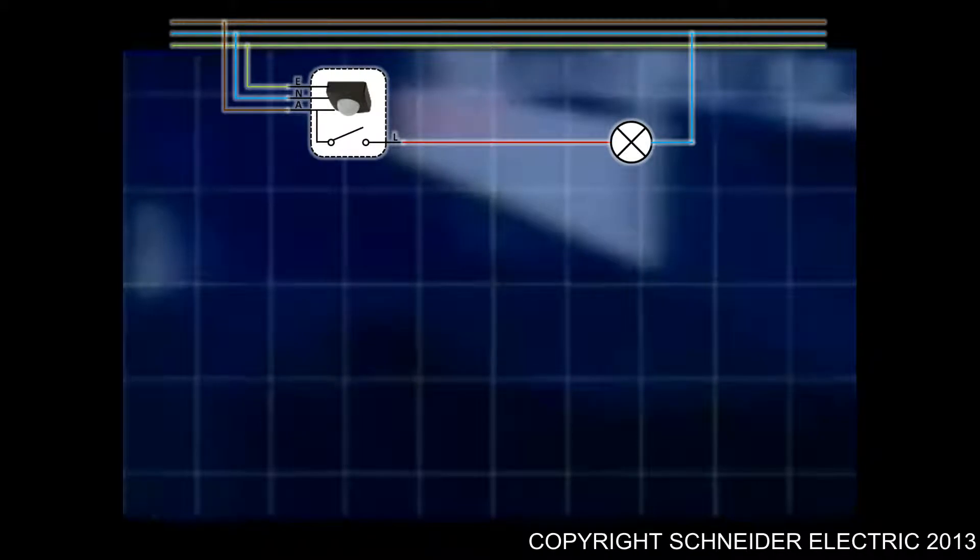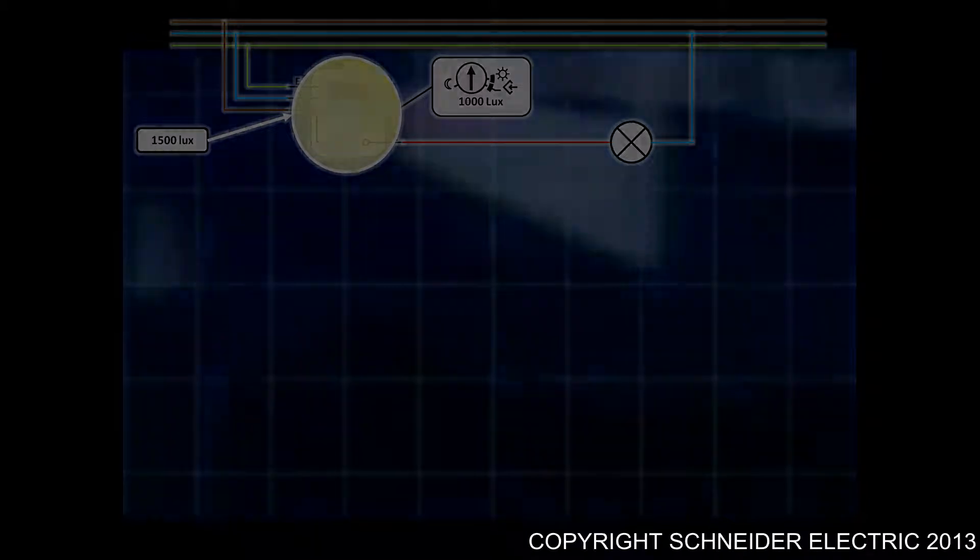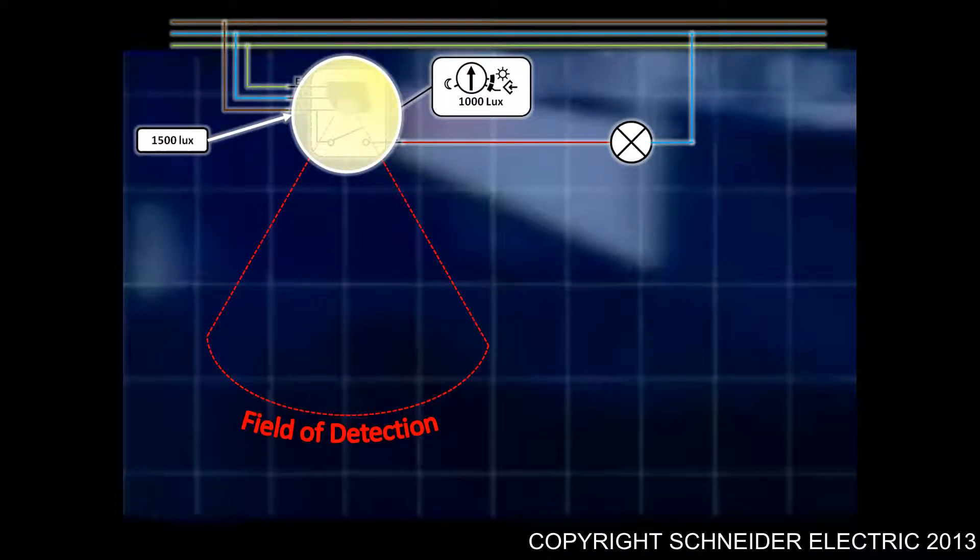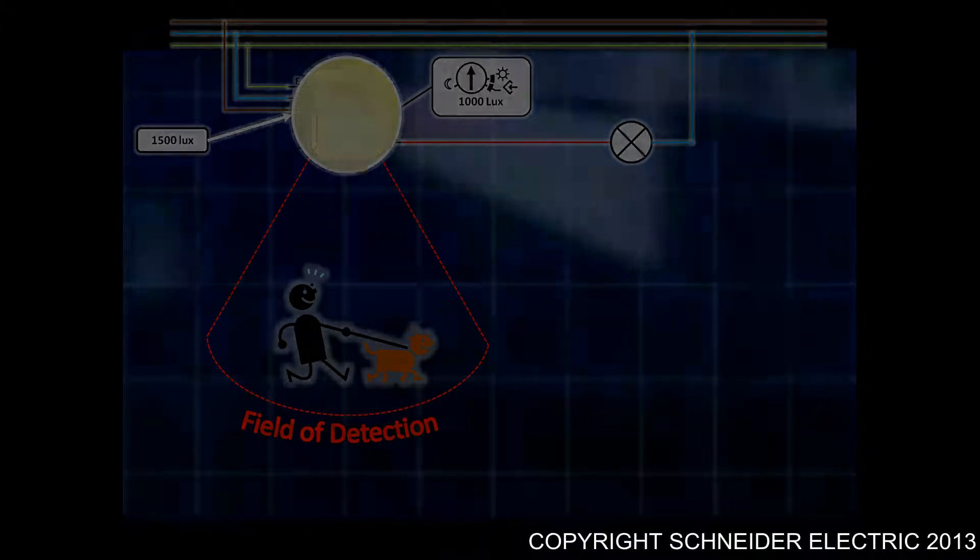Let's take the same scenario but increase the ambient light level. In this particular scenario, the lux level is set to 1000. The ambient light is at 1500 lux. The sensor within its field of detection detects movement. And if we look at that same formula, the same logic.